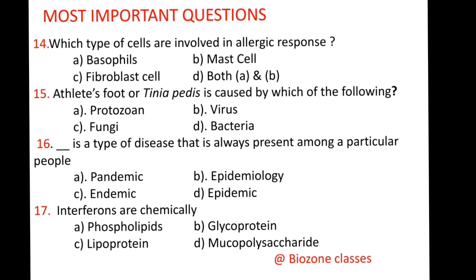Question number 16: Dash is a type of disease that is always present among a particular people. A. Pandemic, B. Epidemiology, C. Endemic, D. Epidemic. The correct option is C, endemic — a disease that occurs in a particular zone among a particular people is called endemic.